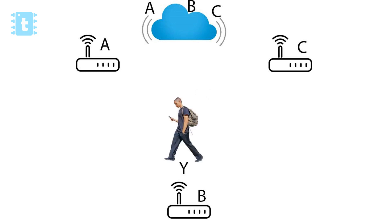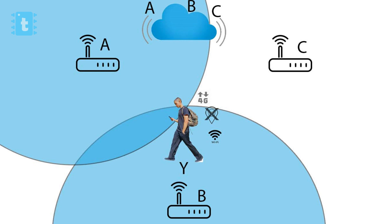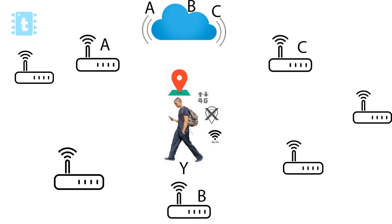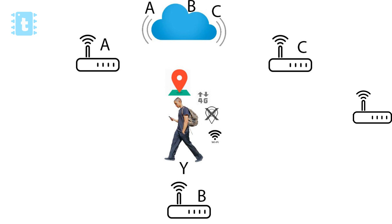Now Person Y comes into the picture with a phone that has only Wi-Fi and internet enabled — no GPS. If Person Y wants to know their location, they simply scan nearby Wi-Fi networks and send the details to Google's server. Since Google already knows the location of those routers, it can easily estimate the approximate location of Person Y. The more nearby networks detected, the more precise the location will be. This is how Google's geolocation works.